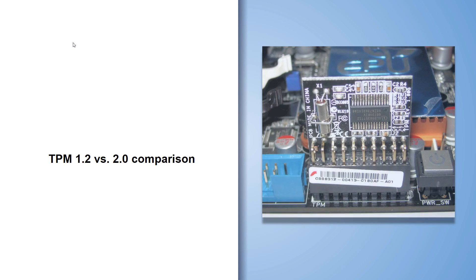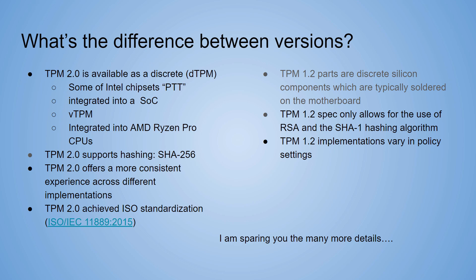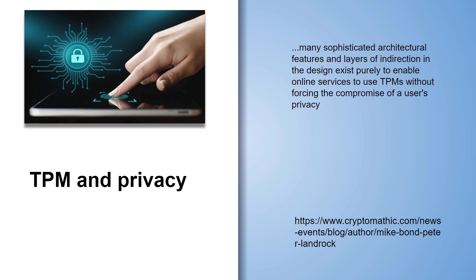There are two versions of TPM: 1.2 and 2.0. TPM 2.0 allows different implementations of the trusted platform module and offers a more consistent experience. One of the strong points of TPM has been its foundation in privacy. Mike Bond and Peter Landrock wrote an extensive overview of TPM and how it is designed very deliberately to ensure user privacy.